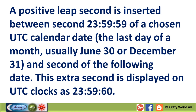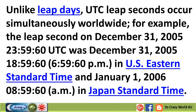A positive leap second is inserted between second 23:59:59 of a chosen UTC calendar date — the last day of a month, usually June 30 or December 31 — and the first second of the following date. This extra second is displayed on UTC clocks as 23:59:60. Unlike leap days, UTC leap seconds occur simultaneously worldwide. For example, the leap second on December 31, 2005 at 23:59:60 UTC was December 31, 2005 at 18:59:60 in US Eastern Standard Time, and January 1, 2006 at 8:59:60 AM in Japan Standard Time.